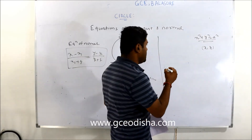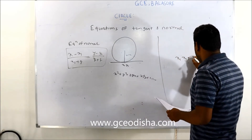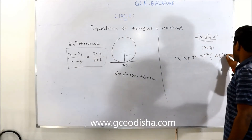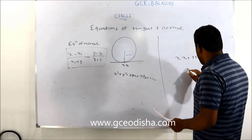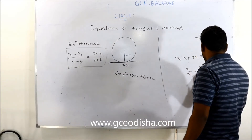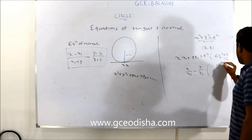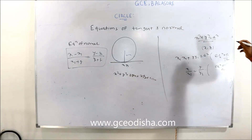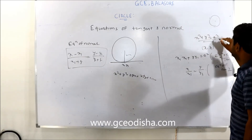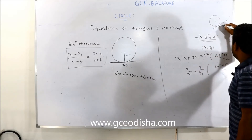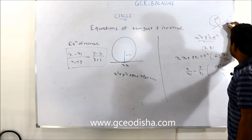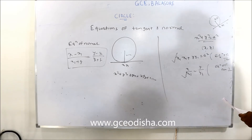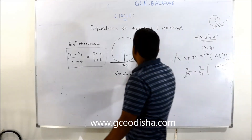When the circle equation is x² + y² = a² (center at origin), and the point of tangency is (x1, y1), the equation of the tangent is x·x1 + y·y1 = a², and the equation of the normal is x/x1 = y/y1. With center at (0, 0) you can easily find both.